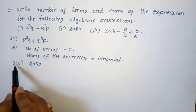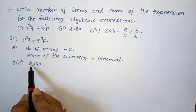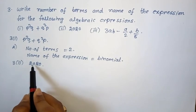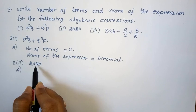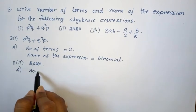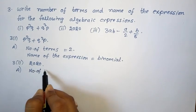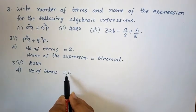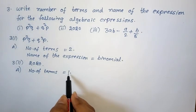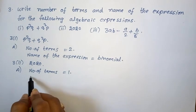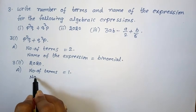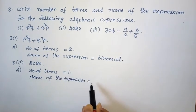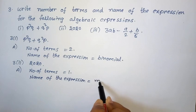Next, 3rd Roman, 2nd one: given expression is 2020. In this the number of terms is only 1. Number of terms equals 1, so the name of the expression is monomial.